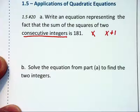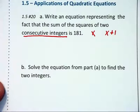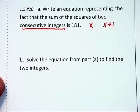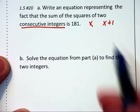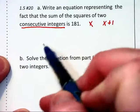Now let's read what we're asking for. Write an equation representing the fact that the sum of the squares of two consecutive integers is 181.